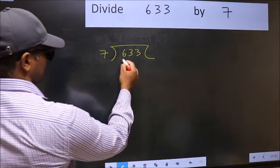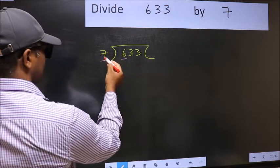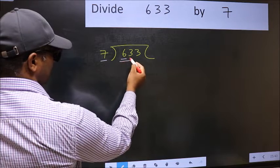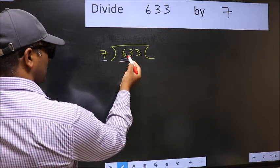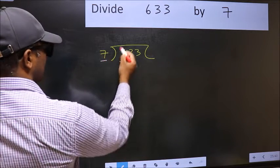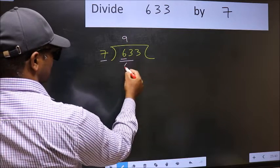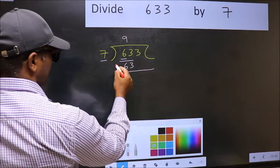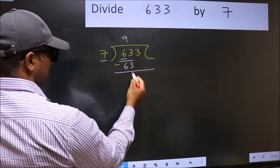Here we have 6 and here 7. 6 is smaller than 7, so we should take two numbers, 63. When do we get 63 in the 7 table? 7 nines 63. Now you should subtract. 63 minus 63, 0.